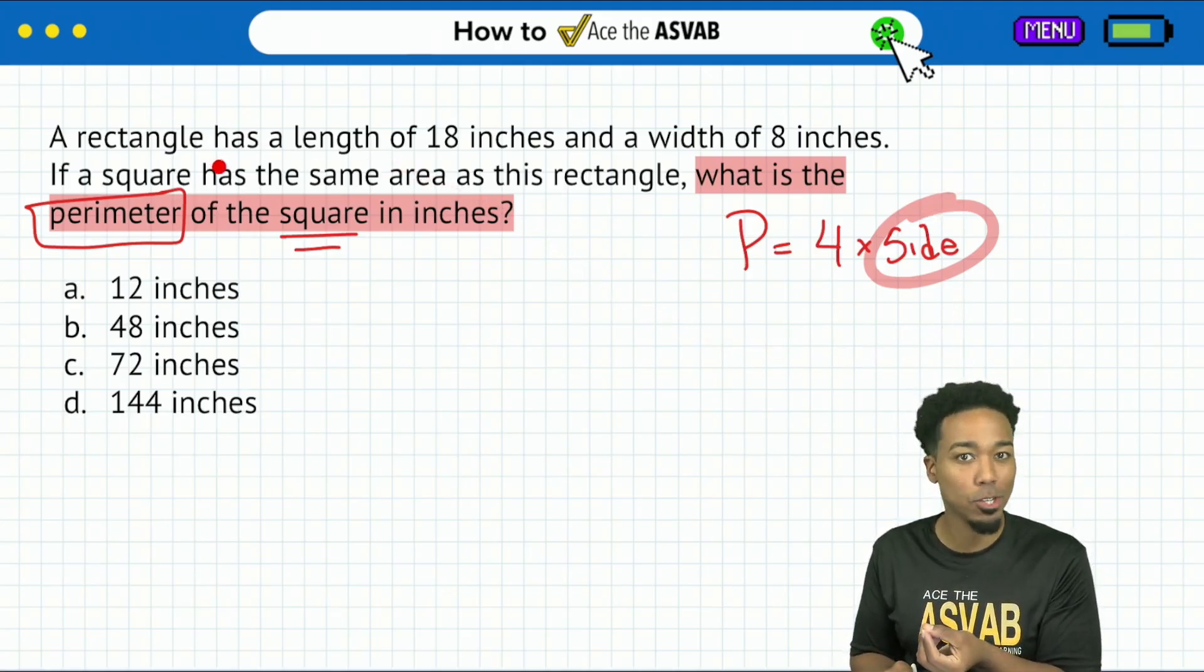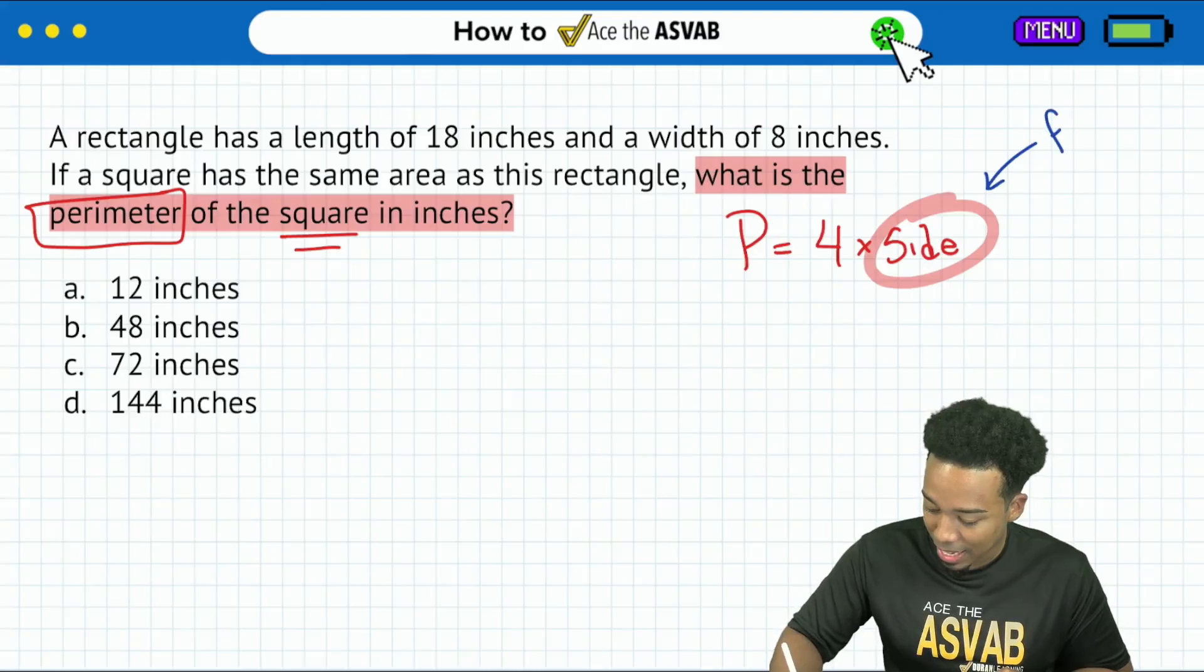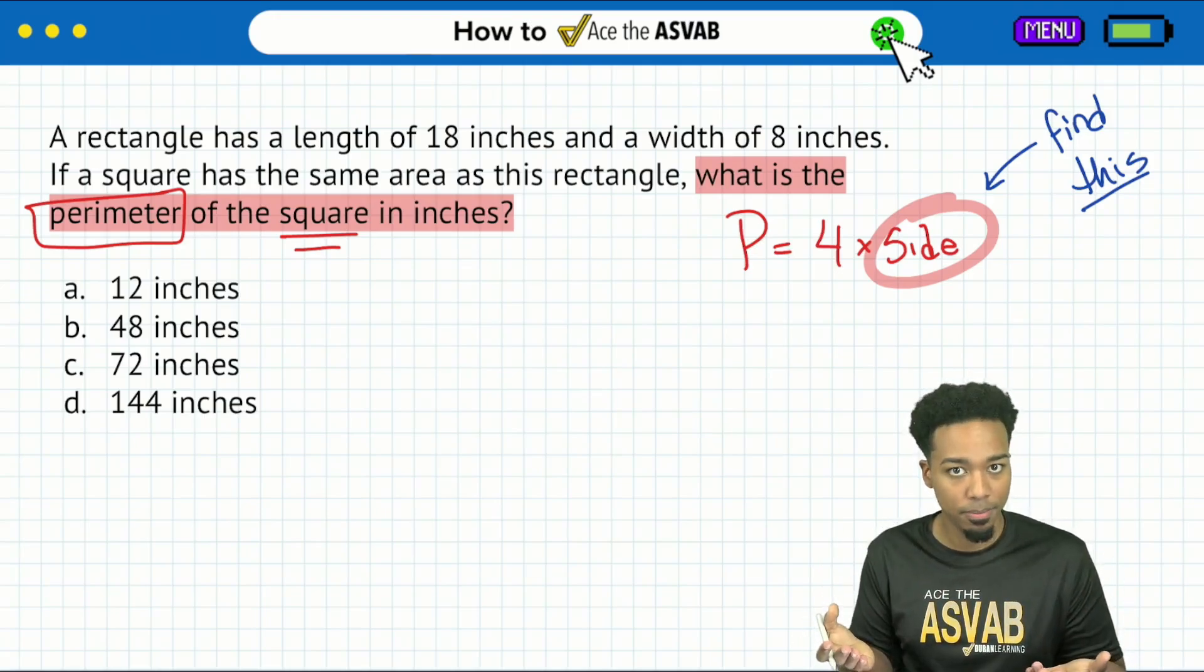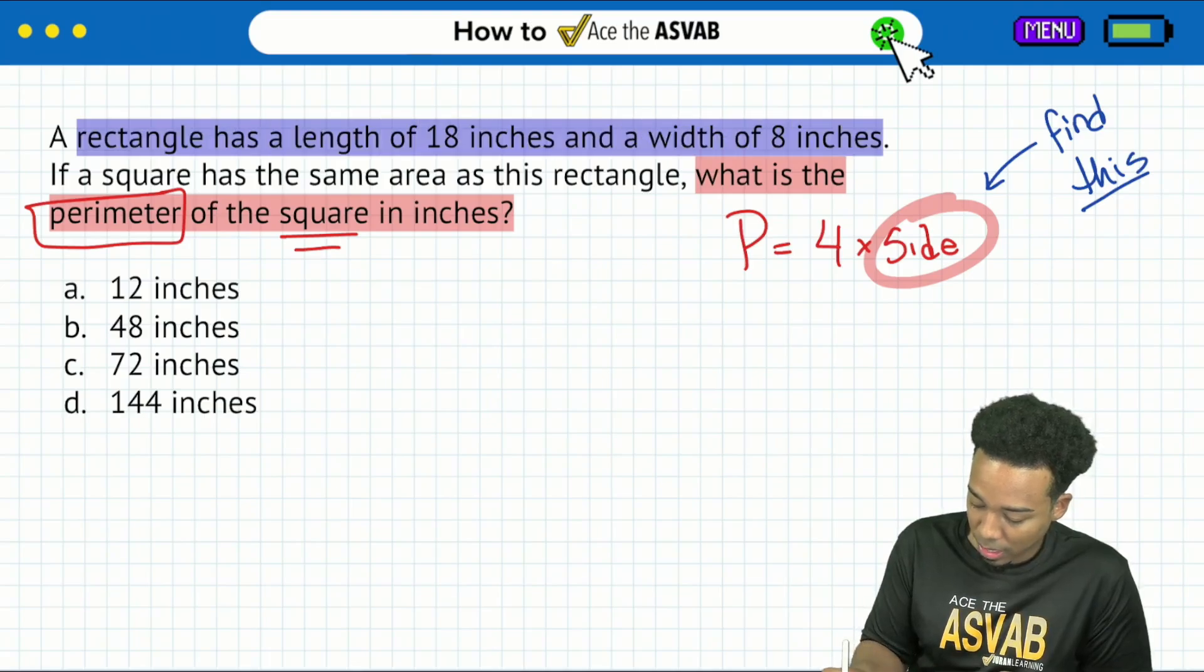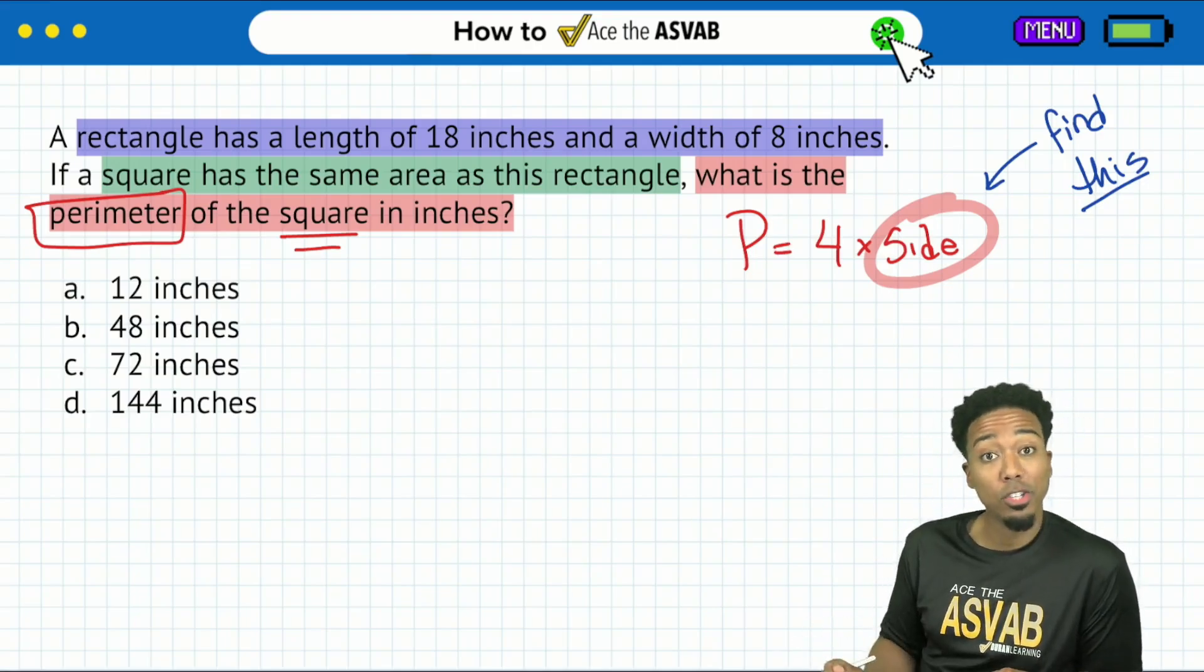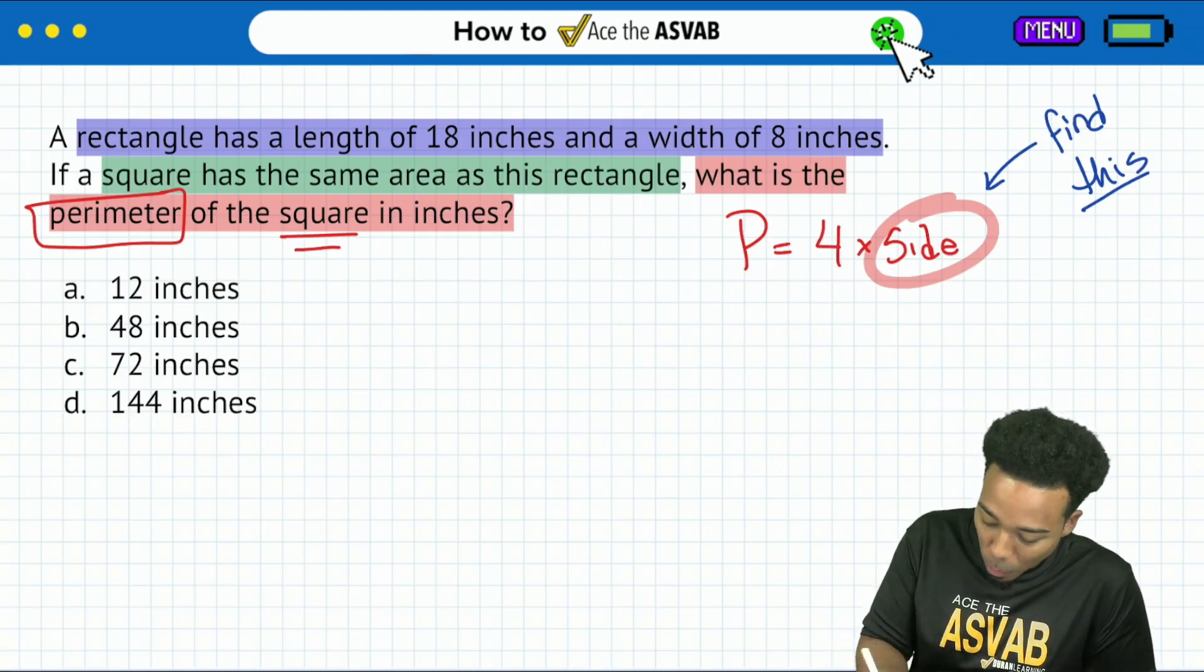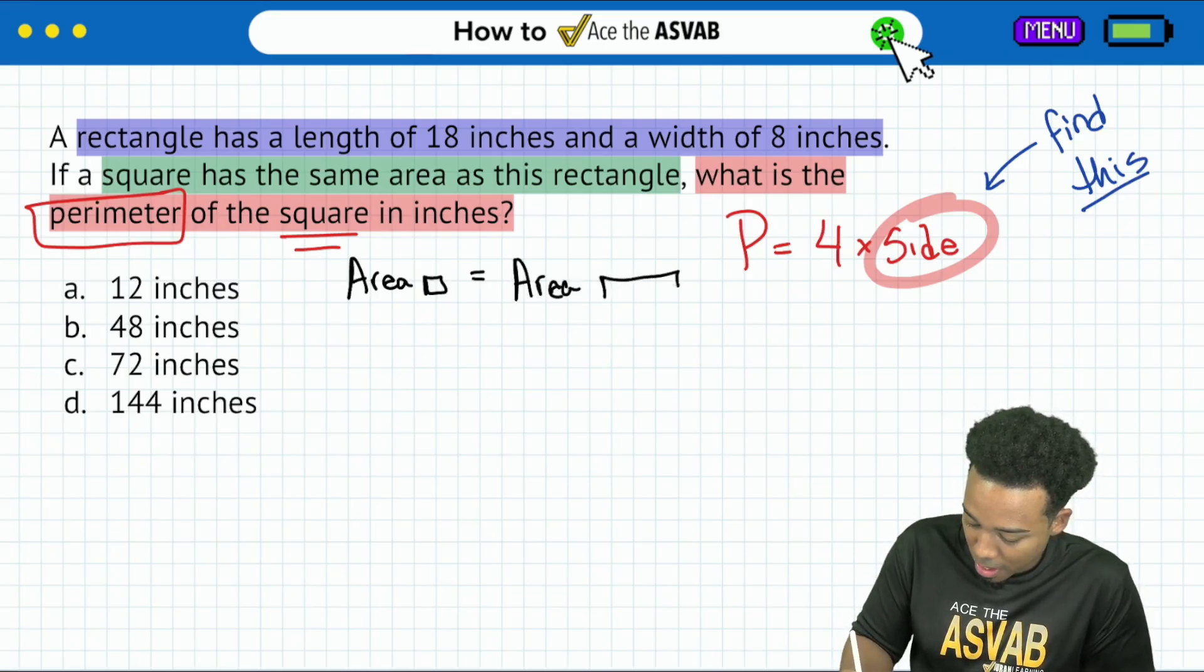But here's the little trick with this one: when you read through and you're looking for the side of the square, you're reading and it says a rectangle. Here's the length. Here's the width. That's not the square. And then you go over here and it says, if a square has the same area as this rectangle, what's the perimeter of the square? Ah, okay. So now here's what you want to do. No matter what, you always want to frame that conversation around what you need. I know I'm looking for the perimeter of the square, so I need the side.